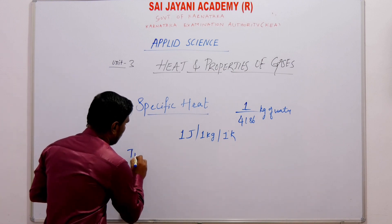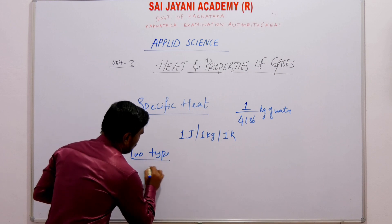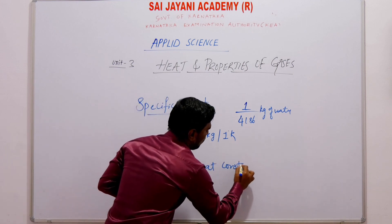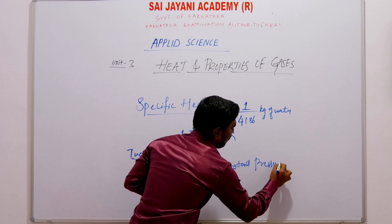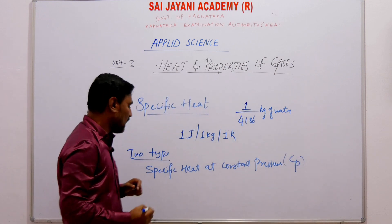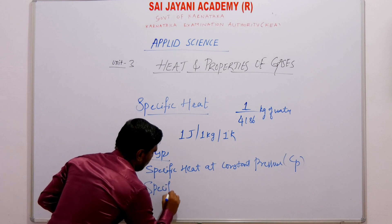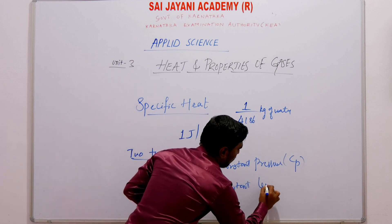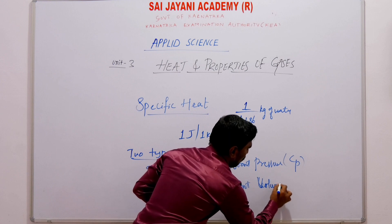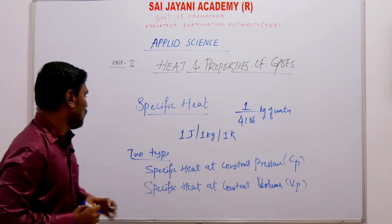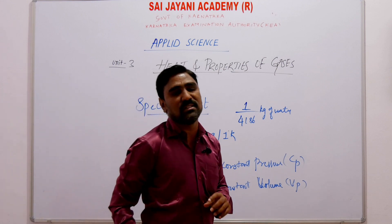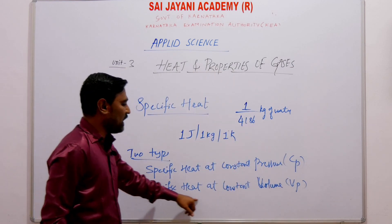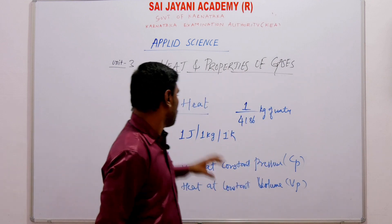There are two types of specific heat. The first is specific heat at constant pressure, that is Cp, and the other is specific heat at constant volume, that is Cv. These are the two types of specific heat of a substance.